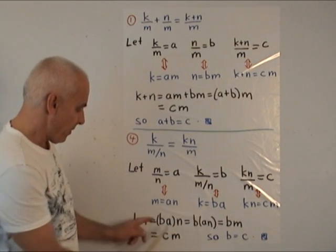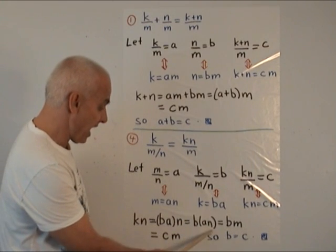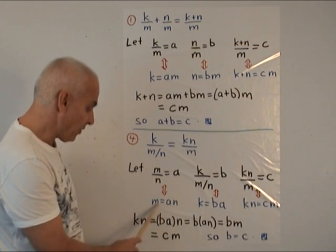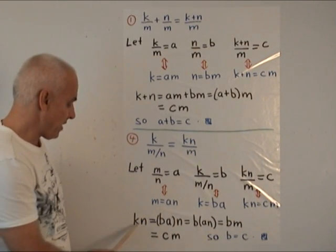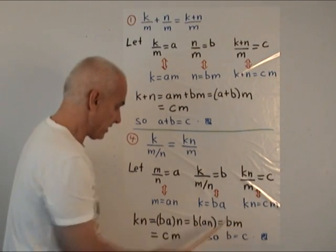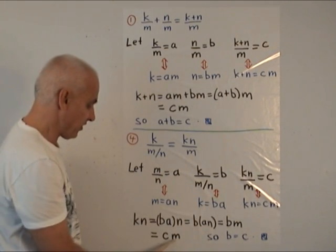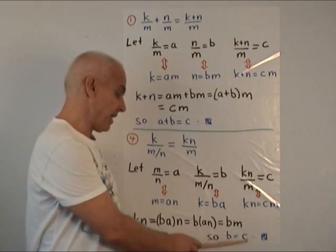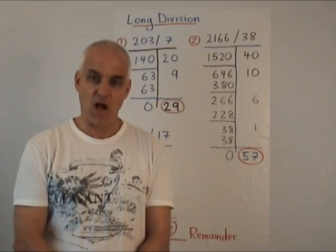Then we use the associative law to rewrite that as b times an. Then we replace the an with an m to get bm. On the other hand, kn from here is c times m. So b times m equals c times m. And so b and c are equal.